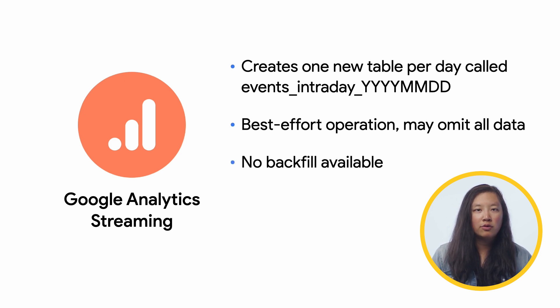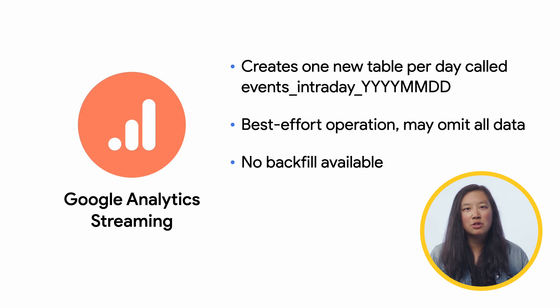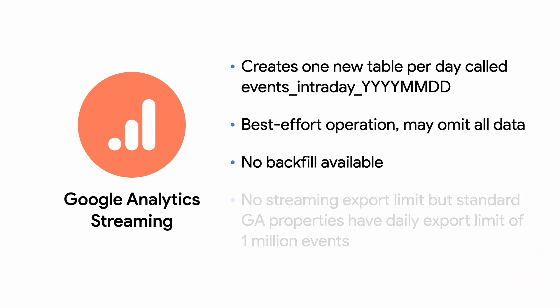It's important to note that no backfill for GA is available, meaning that until you link GA to BigQuery, there will be no GA data available in BigQuery. So if you plan on using BigQuery, or even if you just suspect that you might use it, it's probably worth linking it sooner rather than later so you have data available to query. Also, while there is no limit on streaming export, standard GA properties do have a daily BigQuery export limit of one million events. If your property consistently exceeds the export limit, the daily BigQuery export will be paused and the previous day's exports will not be reprocessed. To get rid of this limitation, you can upgrade to GA 360, and to help operate under that limit, you can use data filtering to determine which events get exported. See the link in the description to learn more about how to set this up.